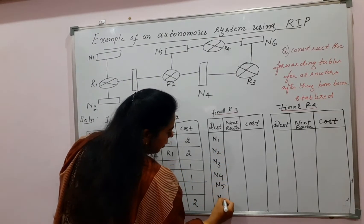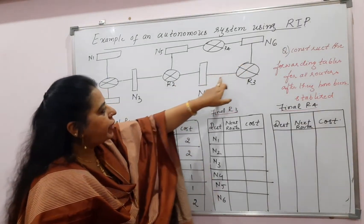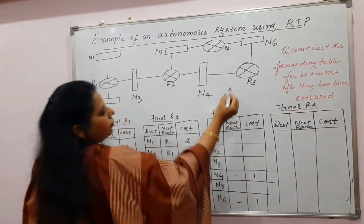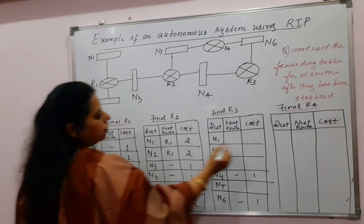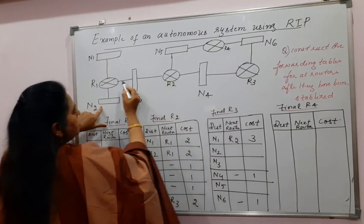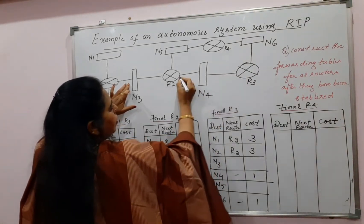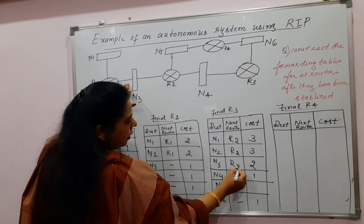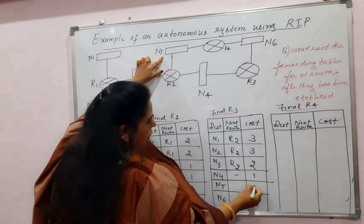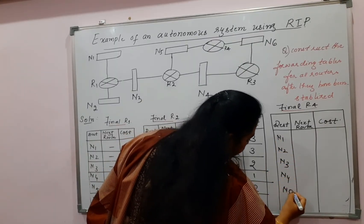Now writing the final values for router R3. R3 has two directly connected networks: N4 and N6, each with cost one. For N1, it is three hops going via R2. For N2, also three hops going via R2. For N3, it is two hops going via R2 — next router R2. For N5, it is two hops and the next router is R2.